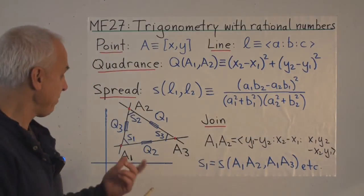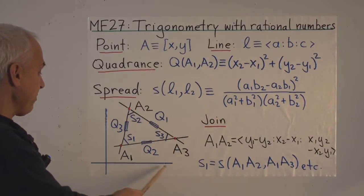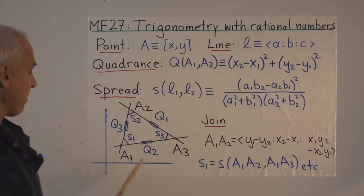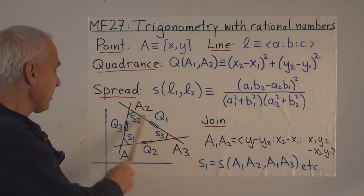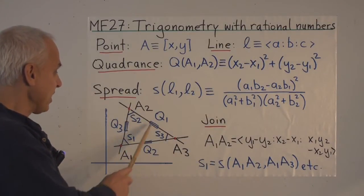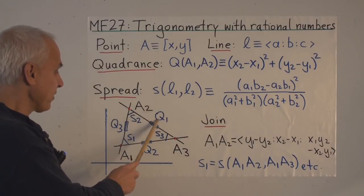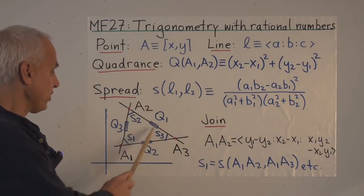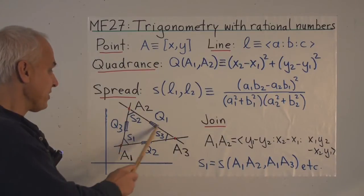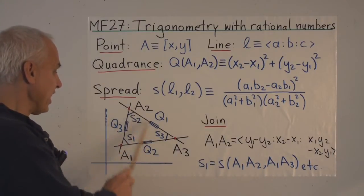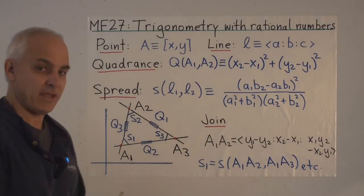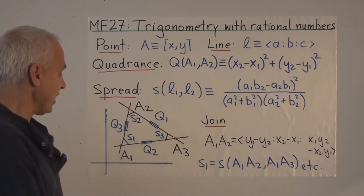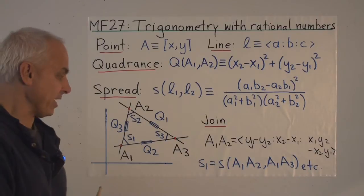In a diagram, we may have points a1, a2, and a3. We represent the quadrances of the sides by little bars q1, q2, and q3. Notice that q1 is usually opposite a1, q2 is opposite a2, and q3 is opposite a3. The spreads made by the pairs of lines are s1, s2, and s3.